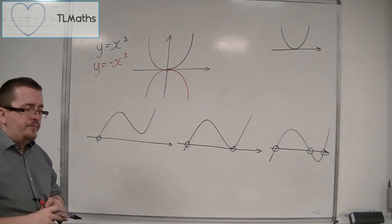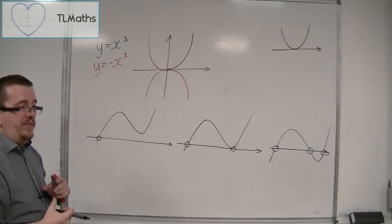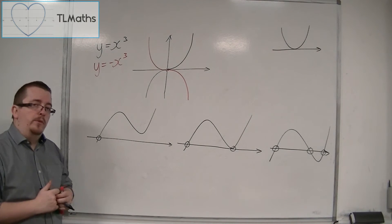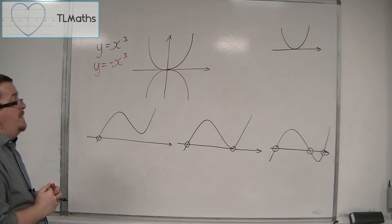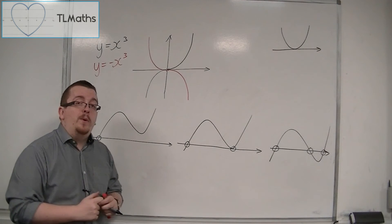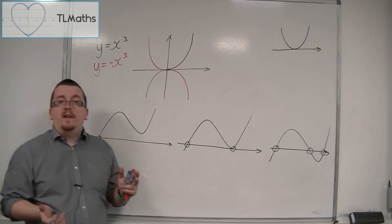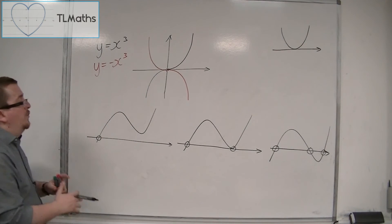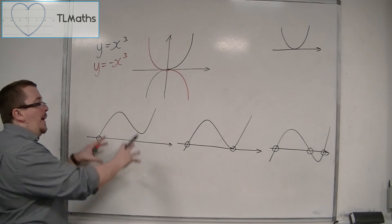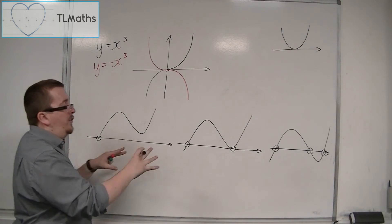Now, all three of these are positive x cubed examples. So they might be like x cubed plus 2x squared minus 3x minus 5, for example. But all three are examples where you have a positive x cubed.